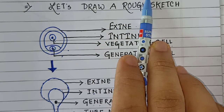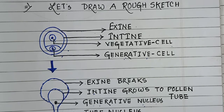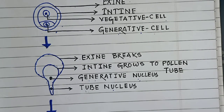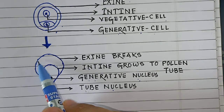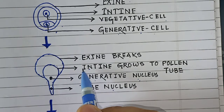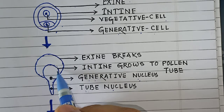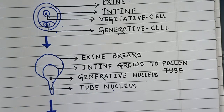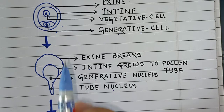In the post-pollination developmental stages, germination takes place. The pollen grains are stimulated by the secretion of the stigma and undergo germination. During germination, the exine breaks and the intine grows to form the pollen tube — a tube-like structure is formed, referred to as the pollen tube.